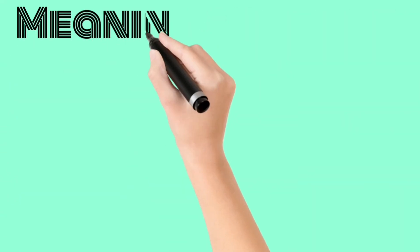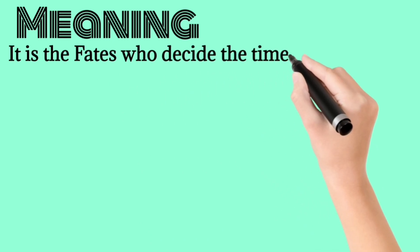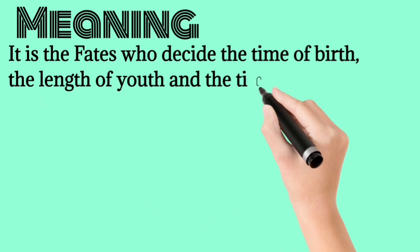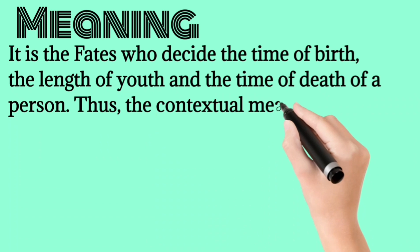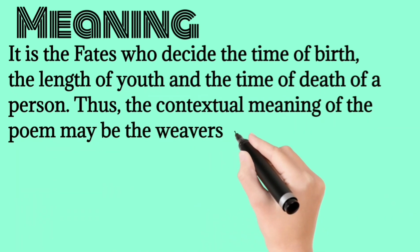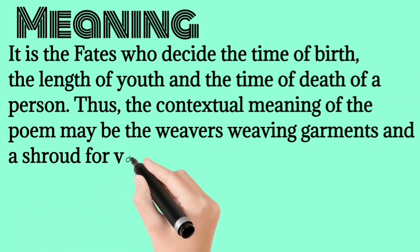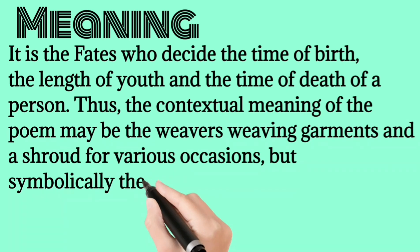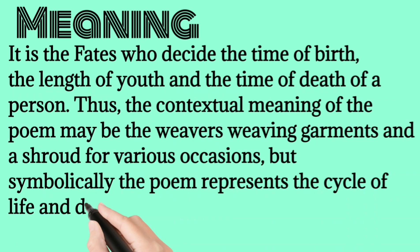Meaning: It is the fates who decide the time of birth, the length of youth, and the time of death of a person. Thus, the contextual meaning of the poem may be the weavers weaving garments and a shroud for various occasions, but symbolically the poem represents the cycle of life and death, with the threads of each stage being woven by the fates.